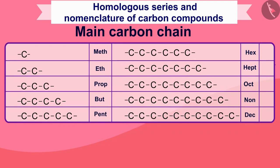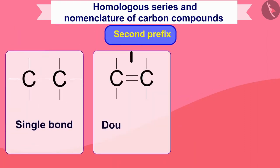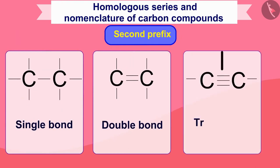Now you look at whether the carbon compound has a single bond, double bond, or triple bond. If there is a single bond, write '-ane'. If there is a double bond, write '-ene'. And if there is a triple bond, write '-yne'.